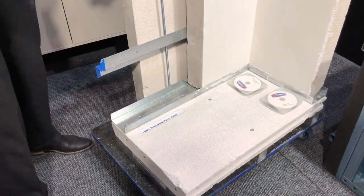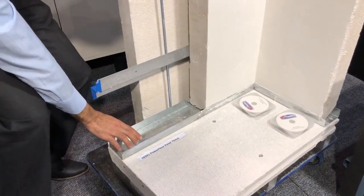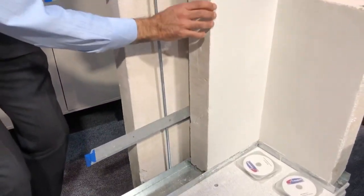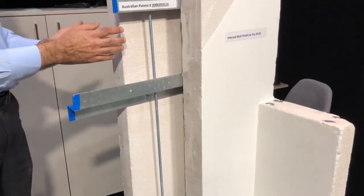If you are starting from your slab here, this is your slab, this is the bottom track, this is your internal wall and this is the cavity and this is your external wall.